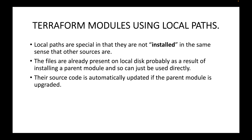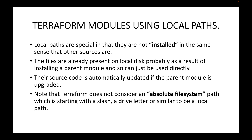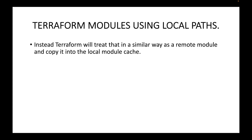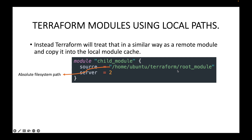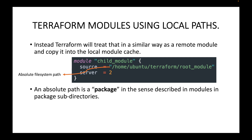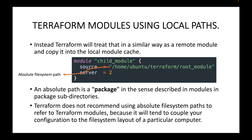Note that Terraform does not consider an absolute file system path — one starting with a slash, a drive letter, or similar — to be a local path. Instead, Terraform treats it similarly to a remote module and copies it into the local module cache. So if you provide an absolute file system path, Terraform treats it as a remote module and downloads the source code from that path into your local module cache.